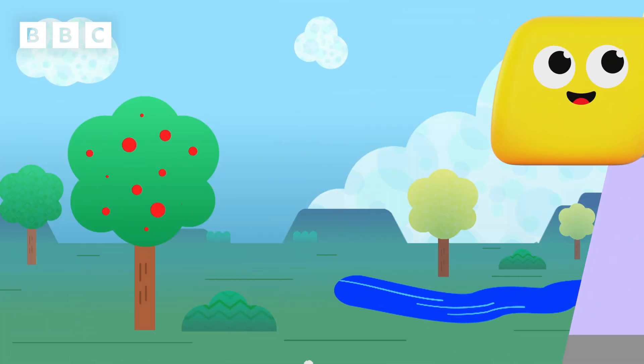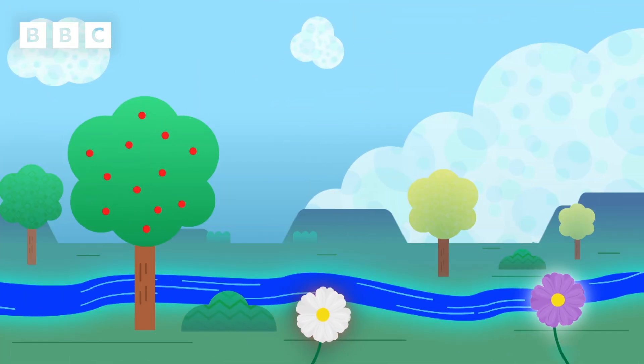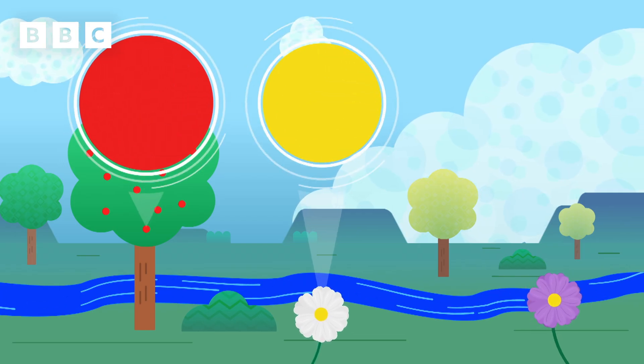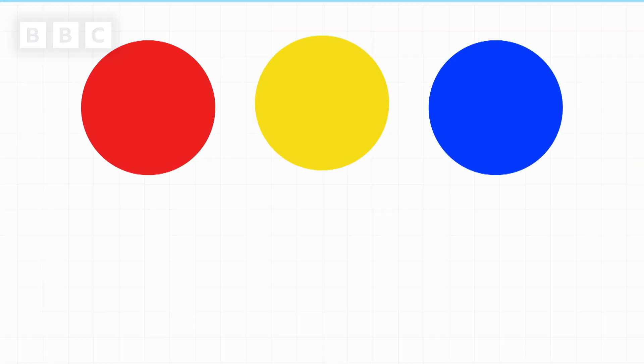Colours are everywhere. There are lots of important colours that we can mix together to make a huge range of different colours. Here are red, yellow and blue. These are called primary colours.